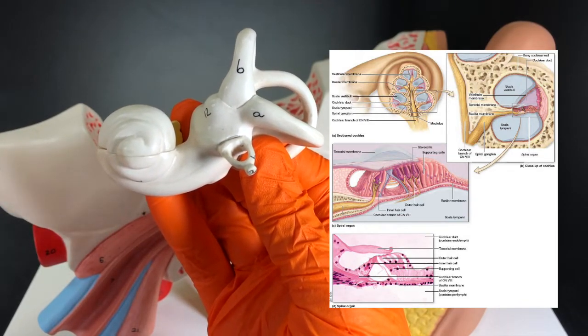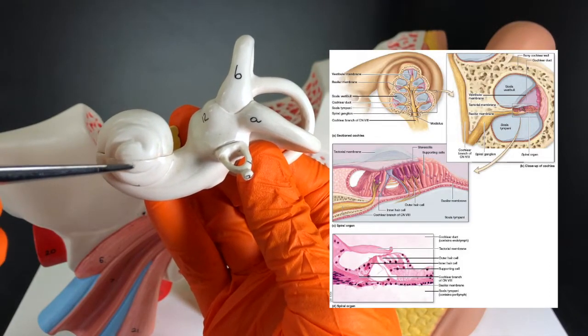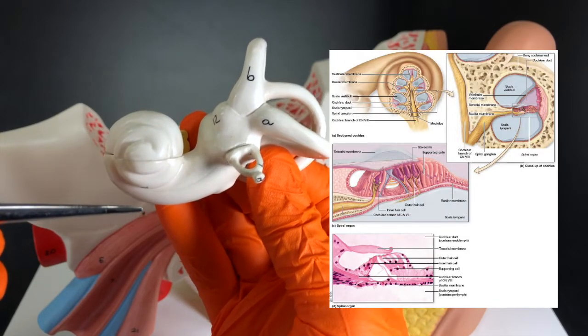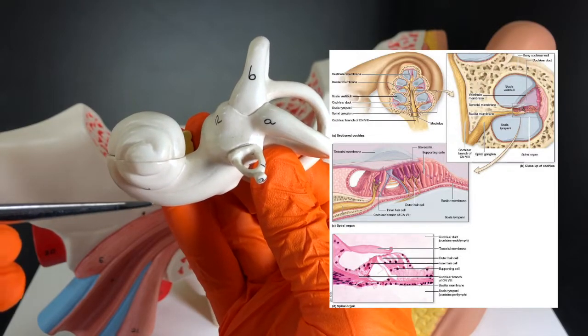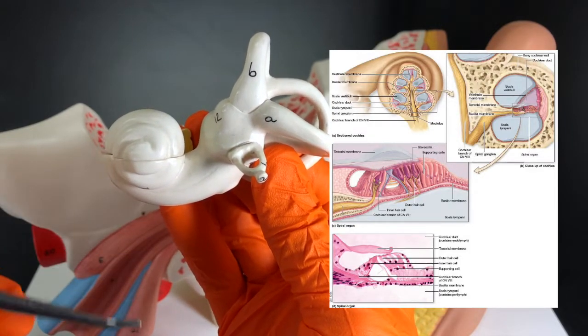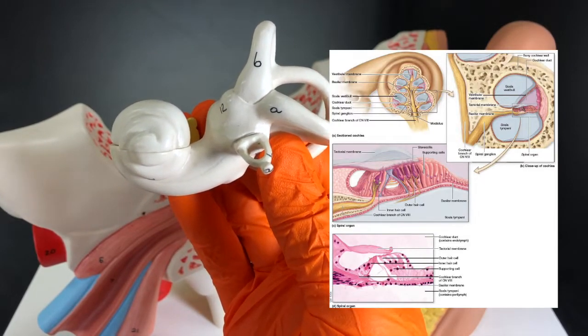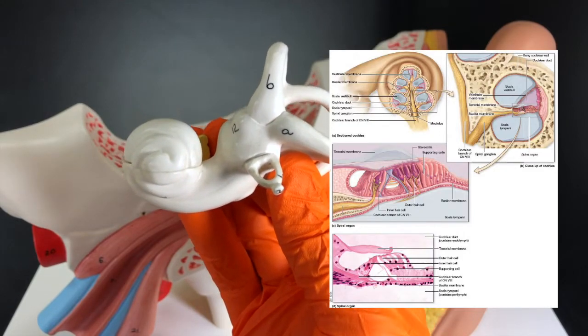And then from the vestibular membrane, that fluid wave will go into the cochlear duct or the scala media. From there it will vibrate the basilar membrane, and that basilar membrane is what is attached to the hair cells.